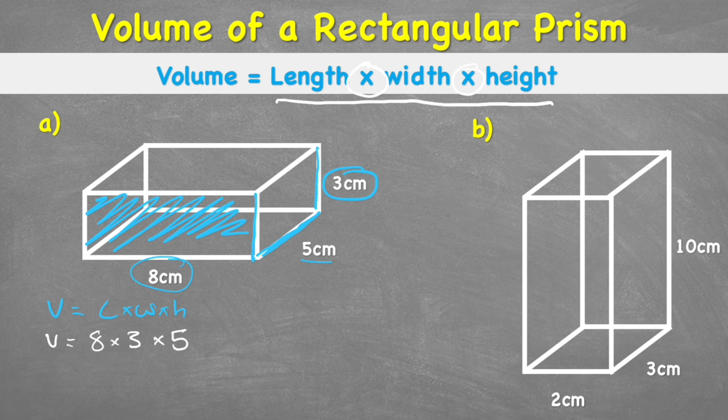And the width is 5cm. So now that we can solve. We can do volume equals 8 times 3, which is 24, times 5.